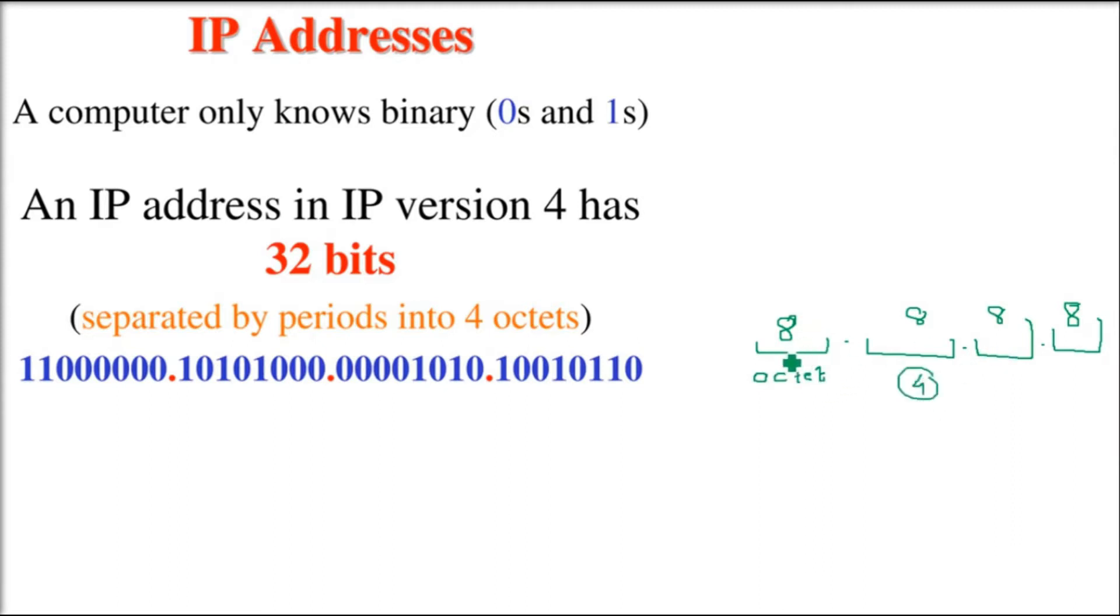There are 4 octets here. If you see, the first octet has 8 bits, then a period, second octet has 8 bits, third octet has 8 bits, and fourth octet has 8 bits. In between we have three dots, so 8, 8, 8, 8 bits with three dots.